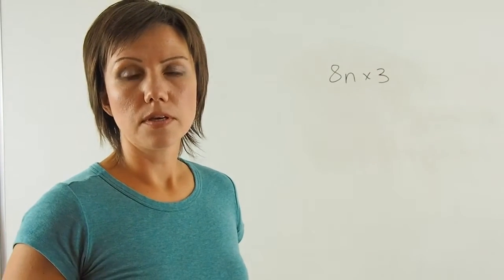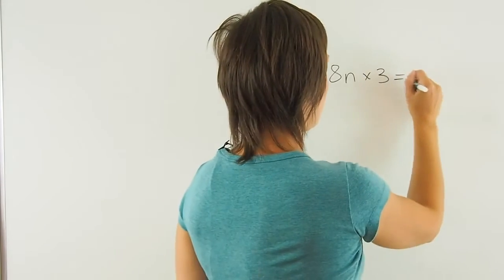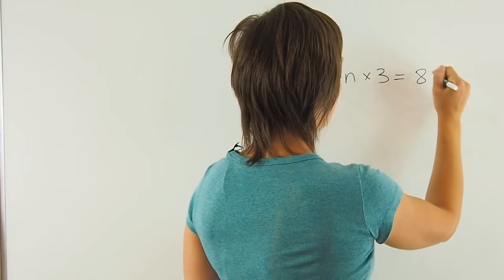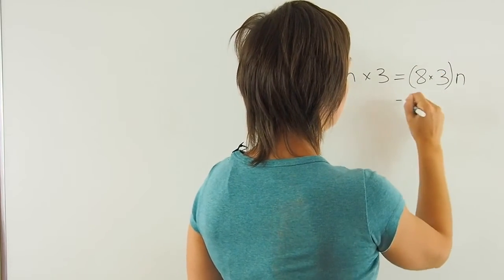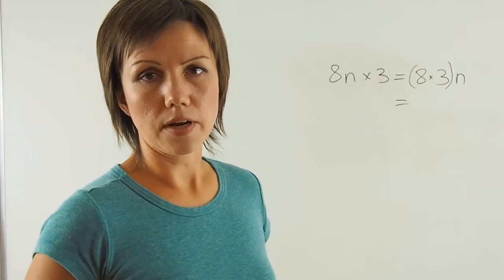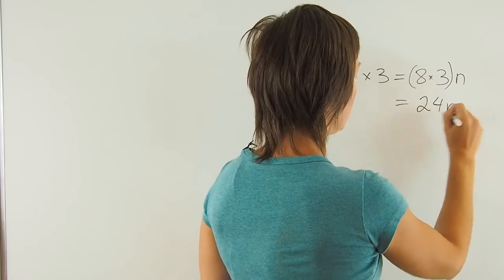I can use the associative property with this product, and I can say that 8 times 3 and times N will give me the right answer. 8 times 3 is 24N.